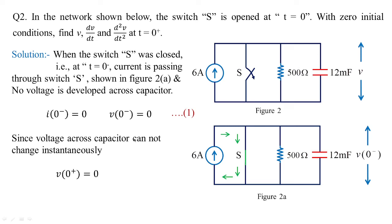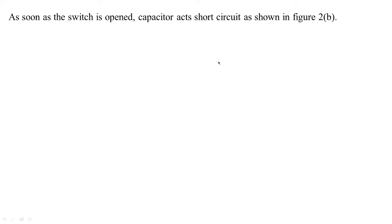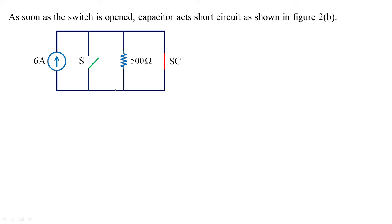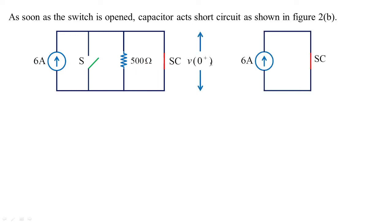We know that the voltage across a capacitor cannot change instantaneously. So whatever the voltage was before switching — 0 volts — will equal the voltage after switching, also 0 volts. As soon as the switch opens, the capacitor acts as a short circuit. When the capacitor is short-circuited, v(0+)=0. So naturally v(0−)=0, v(0+)=0, i(0−)=0, and i(0+)=0.